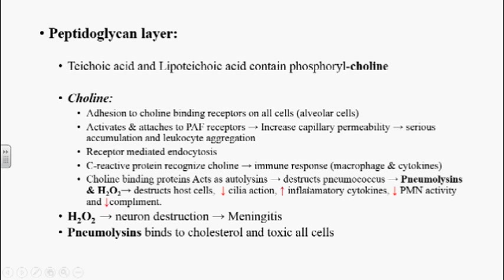Because of the destruction of pneumococcus, hydrogen peroxide is also released. Because of pneumolysins and hydrogen peroxide, host cells get destructed. They decrease ciliary action, increase inflammatory cytokine release by immune cells, decrease PMN cell activity, and decrease complement activity. Hydrogen peroxide can also destroy neurons, which is a major factor in causing meningitis. Pneumolysins produced after lysis of pneumococcus can bind to cholesterol molecules and are toxic to a variety of cells in the human body.